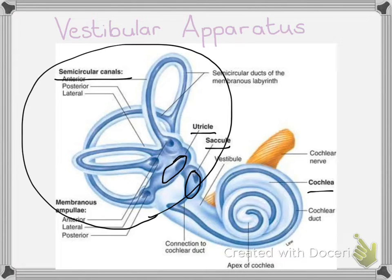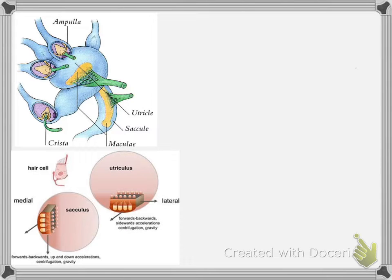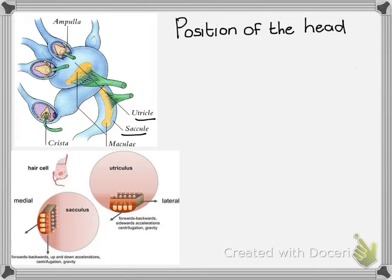If we have a closer look at the utricle and saccule, you will notice that their positions are perpendicular to one another. The utricle and saccule are responsible for sensing the position of the head — whether the head is upright or lying sideways. You need to be able to sense whether the head is in an upright position, like when standing up, or a lying down position. That's why the utricle is in a horizontal position and the saccule is located in a vertical position.